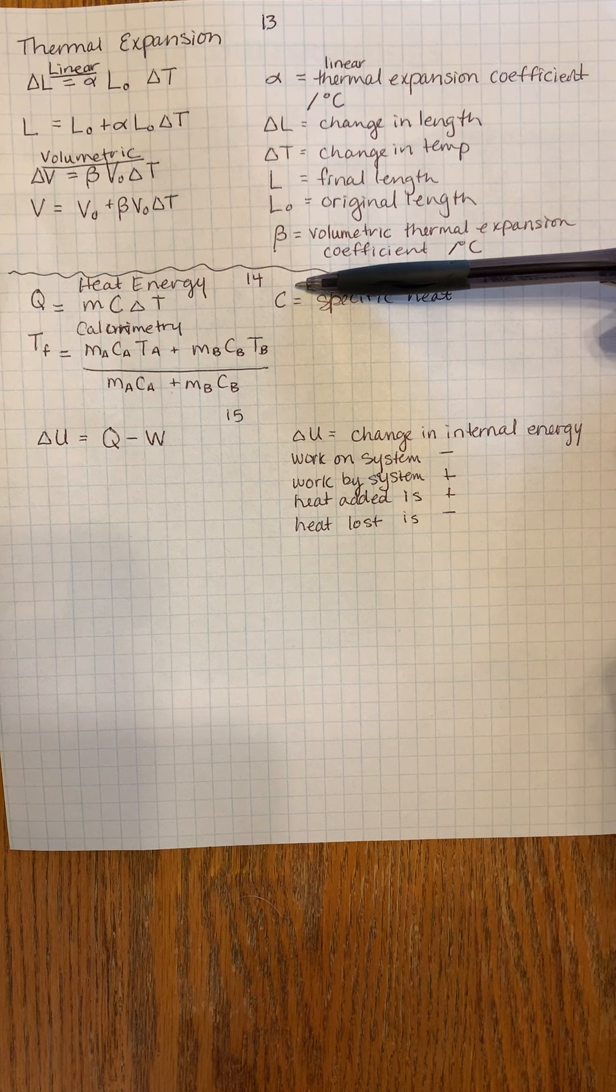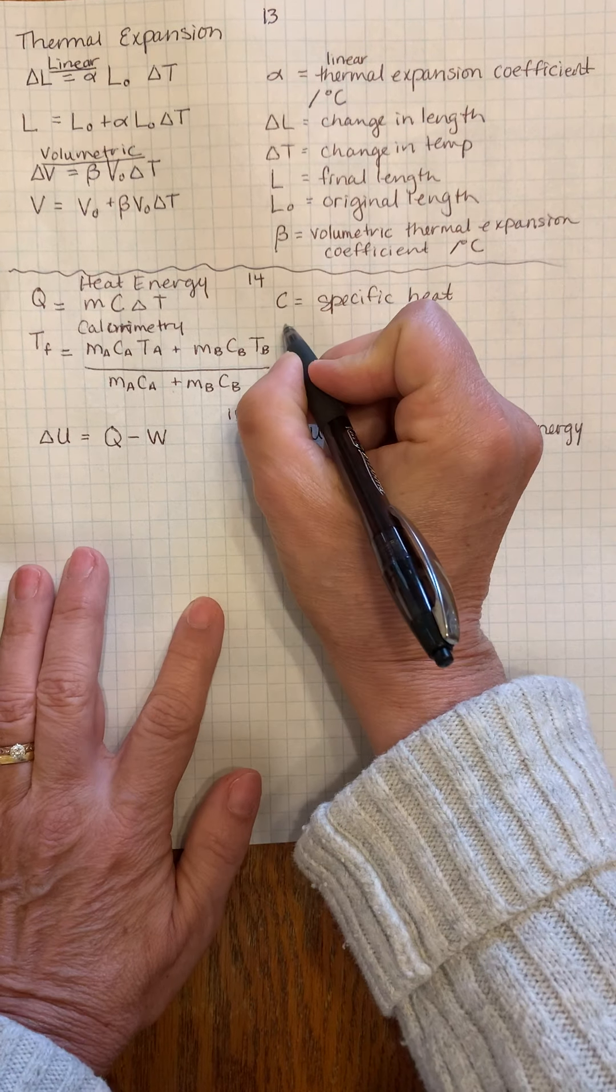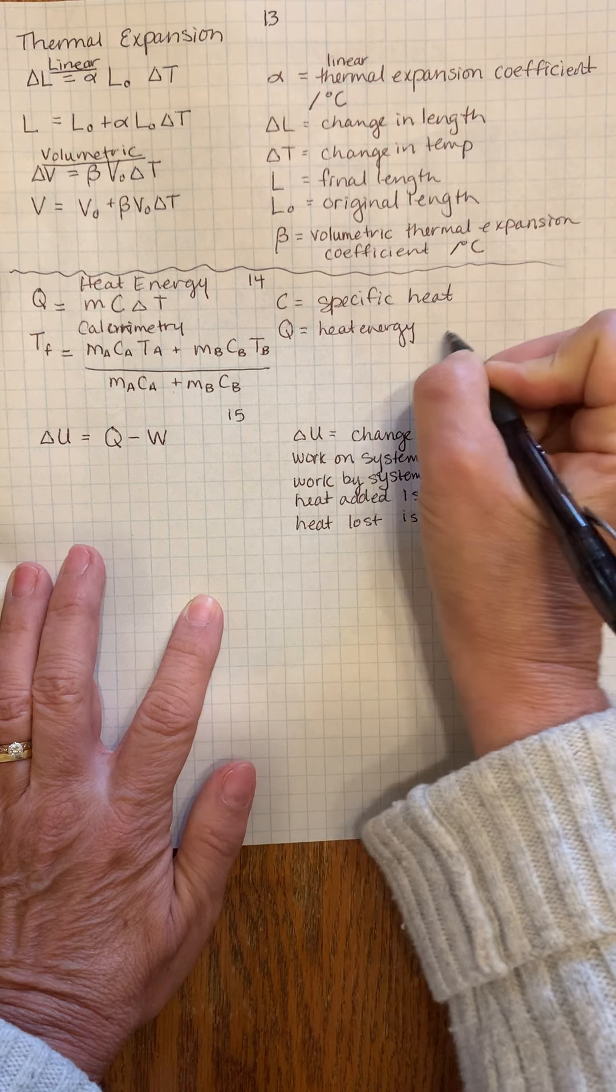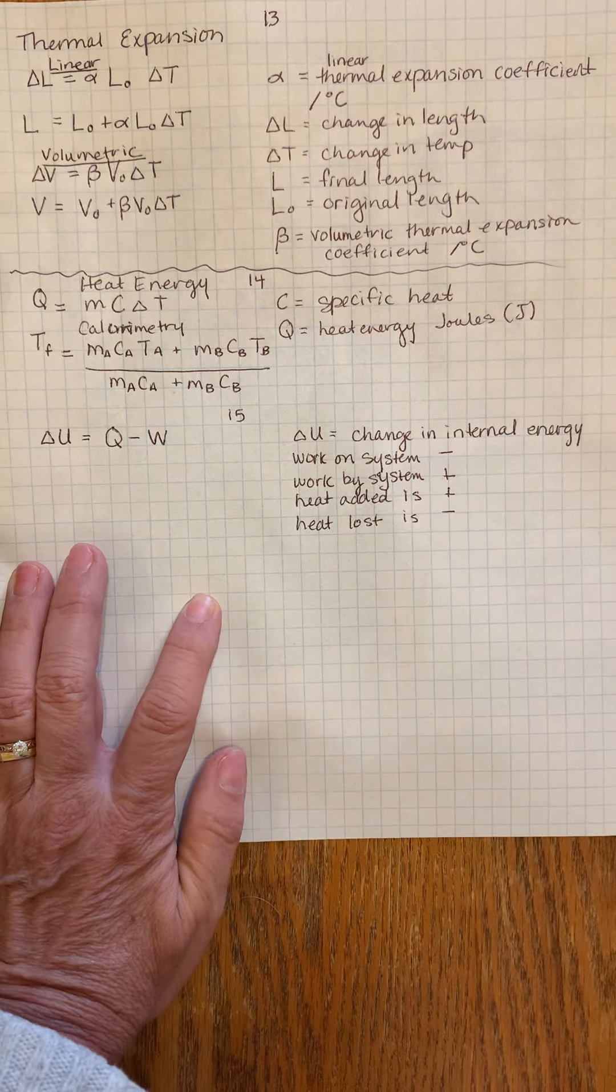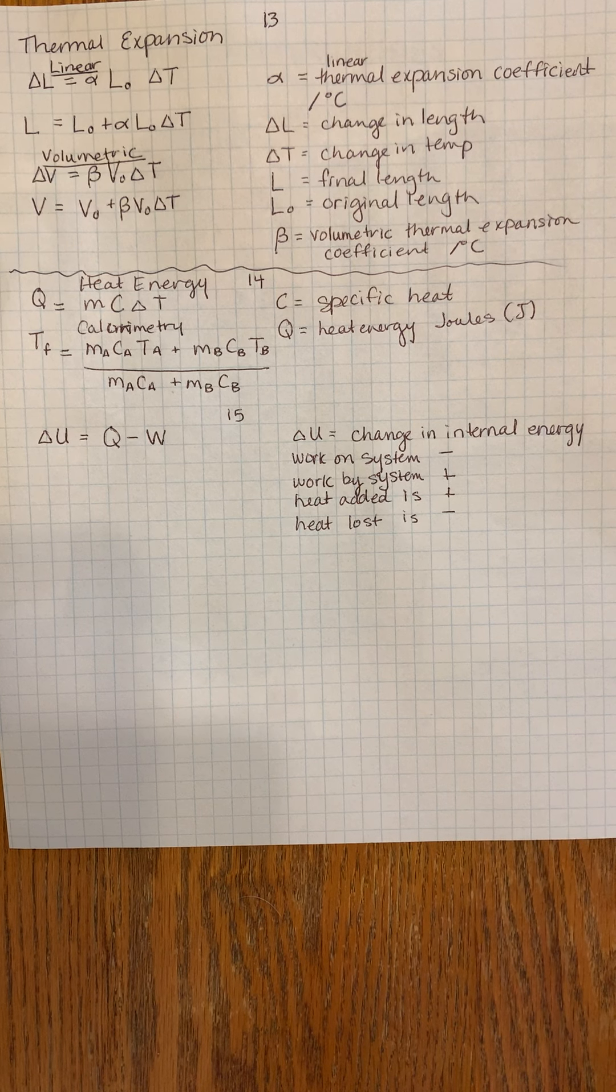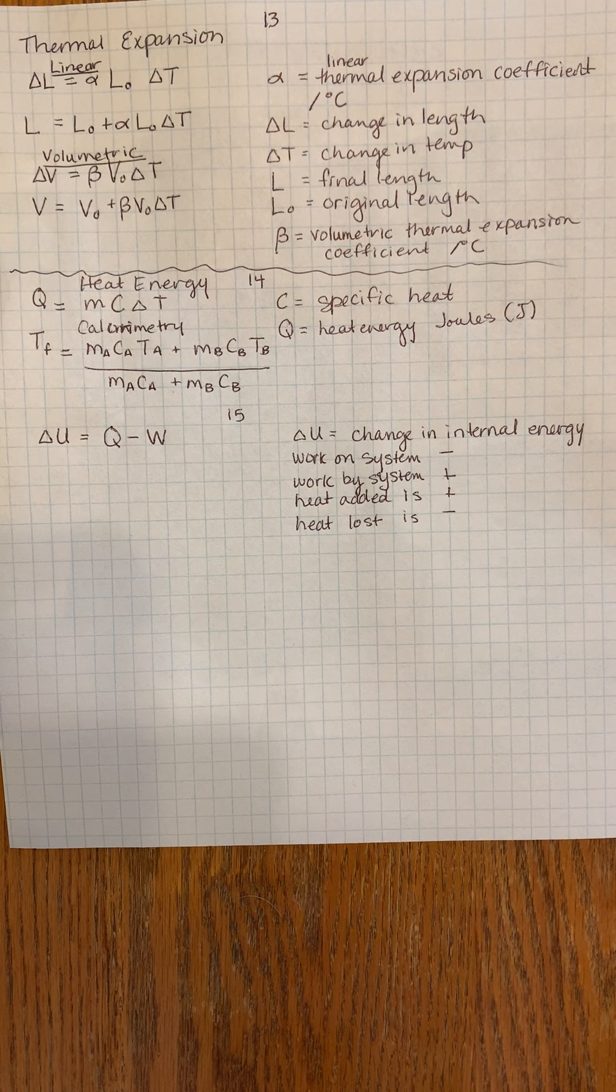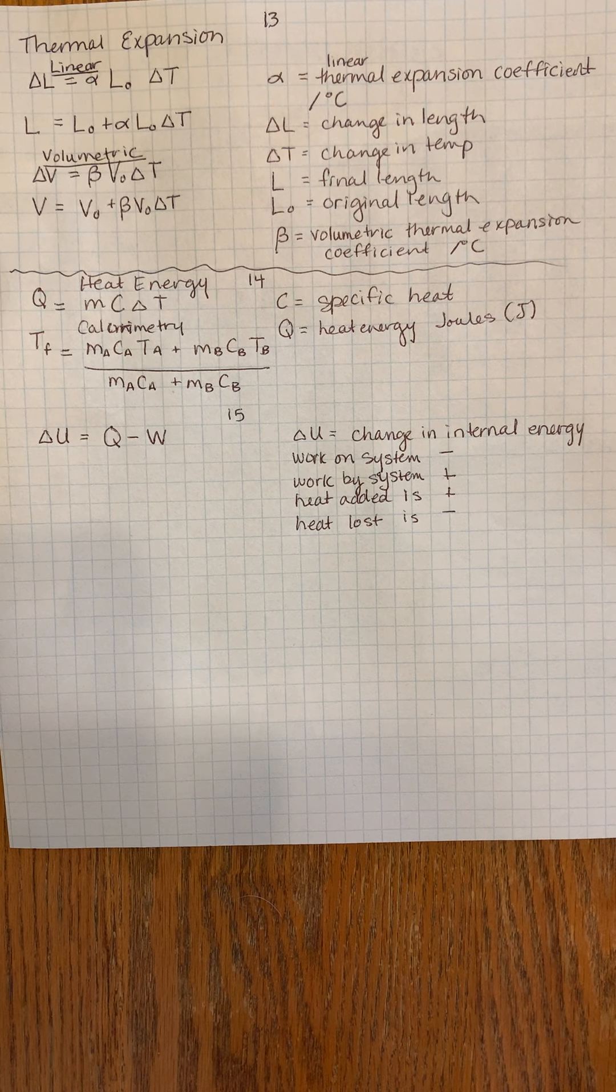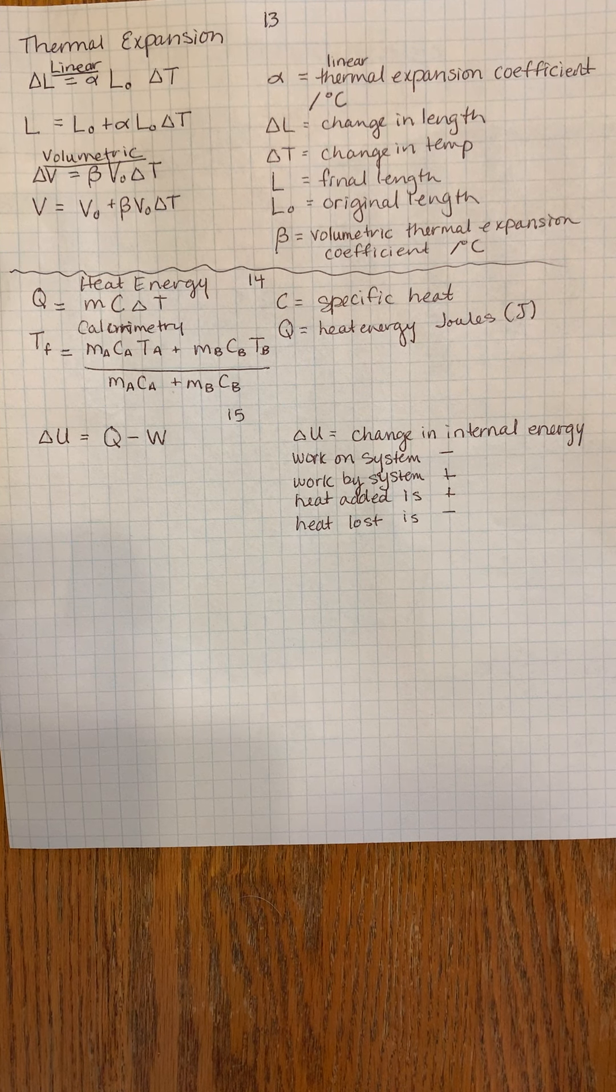Chapter 14 has heat energy. Heat energy is Q, measured in joules like all types of energy. This helps us find out how much energy is needed to change the temperature of something. Q equals mc times ΔT, where the specific heat c is basically specific to the type of material you're talking about. For water it's 4180.